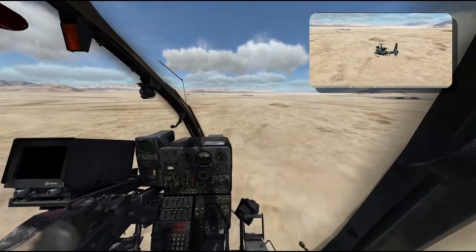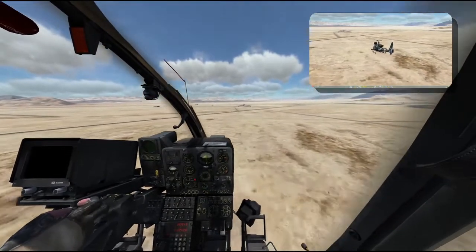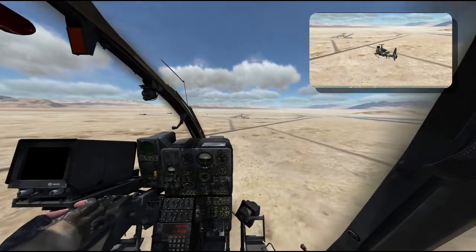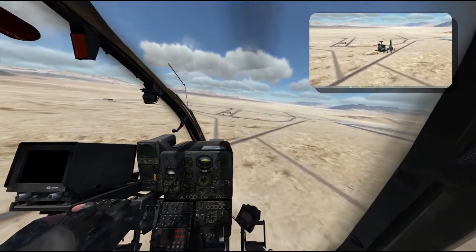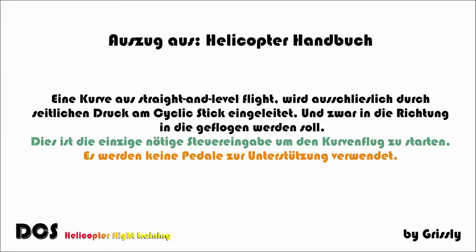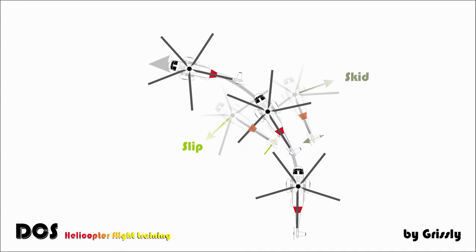So that's the part about crab. Now we're changing to skid and slip — starting with slip. When flying a curve, we only use our cyclic control; we don't use pedals. According to the helicopter handbook, you should not use pedals when flying a turn, regardless of direction, because you may enter a slip or skid situation. If you fly a normal turn only by applying cyclic pressure in the direction of your intended flight, the radius of your curve is determined by the rate of bank and your actual airspeed, and you don't need pedals.